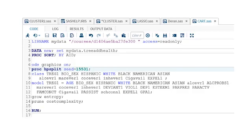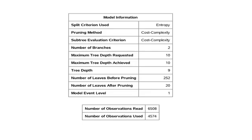Let's run the program and take a look at the output. We can see in the model information table that the decision tree SAS grew has 252 leaves before pruning and 20 leaves following pruning. Model event level lets us confirm that the tree is predicting the value 1 — that is, yes — for our target variable regular smoking. I should note that in my original dataset I coded regular smoking as 1 equals yes and 0 equals no. But because SAS predicts the lowest value of our target variable, this caused my model event level to be 0 or no. So I needed to recode the no's for regular smoking to a 2, keeping 1 equal to yes. To be able to interpret your trees correctly, it's important to pay attention to this detail.